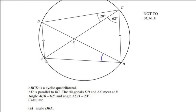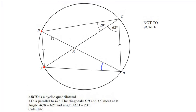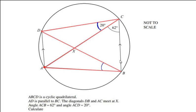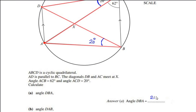Since we need to find angle DBA, let us consider the two points D and A. These divide the circle into a minor segment and a major segment. In the major segment, one angle is made at point C and the same two points make an angle at point B. Since angle ACD is 20 degrees in the major segment, angle DBA is also 20 degrees — using the angles in the same segment theorem.